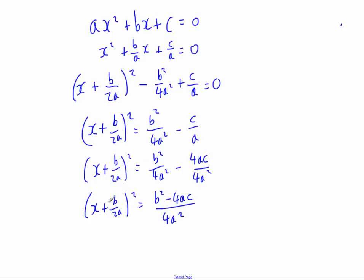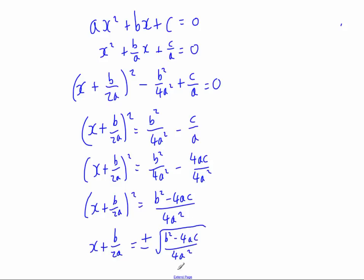Next I'm going to square root both sides, as you would do when completing the square to solve it. So you get x plus b over 2a equals plus or minus the square root of b squared minus 4ac all divided by 4a squared. Now if you square root a fraction — for instance, the square root of 16 over 25 — you just square root the numerator and square root the denominator, giving 4 fifths.